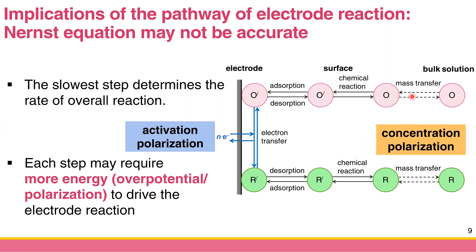If we can enhance the rate of mass transfer, we decrease concentration polarization. Similarly, if we can enhance the rate of electron transfer, we decrease the activation overpotential. Because almost every reaction has both concentration polarization and activation polarization, this is why the Nernst equation is no longer accurate in terms of bulk concentration.